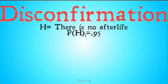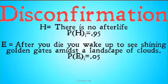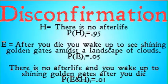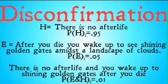Let's take H as 'there is no afterlife,' and say you have a pretty high degree of confidence in this: 0.95. E is the evidence that you die, and you wake up and see shining golden gates amidst a landscape of clouds. You think this is pretty unlikely — probably not going to happen, but you never know — so you give it a 0.05 degree of belief. Finally, the probability of both E and H — that there is no afterlife and yet you wake up to shining golden gates after you die — those seem pretty contradictory, so you assign that a very small degree of belief: 0.01. You really doubt that waking up to the pearly gates would still mean there is no afterlife.